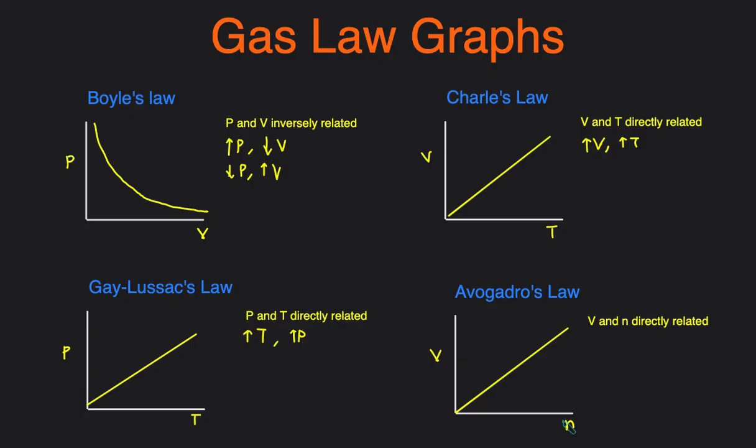And that's how the graphs for the four different gas laws look. So if they're directly related, then it's going to be a straight line with a positive slope. And if it's an inverse relationship, it's going to look like this.